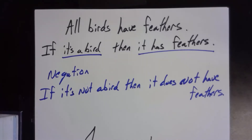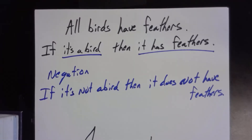Some things to be aware of: let's say the statement is 'if it's not a great dane, then it's not a big dog.' Once again, I'm not talking about whether it's true right now. So if that's the original if-then statement and we want to negate it, it would be: 'if it is a great dane, then it is a big dog.' So if there's a 'not' in there and you want to negate it, you take it out. If there's not a 'not' in there, you put it in.